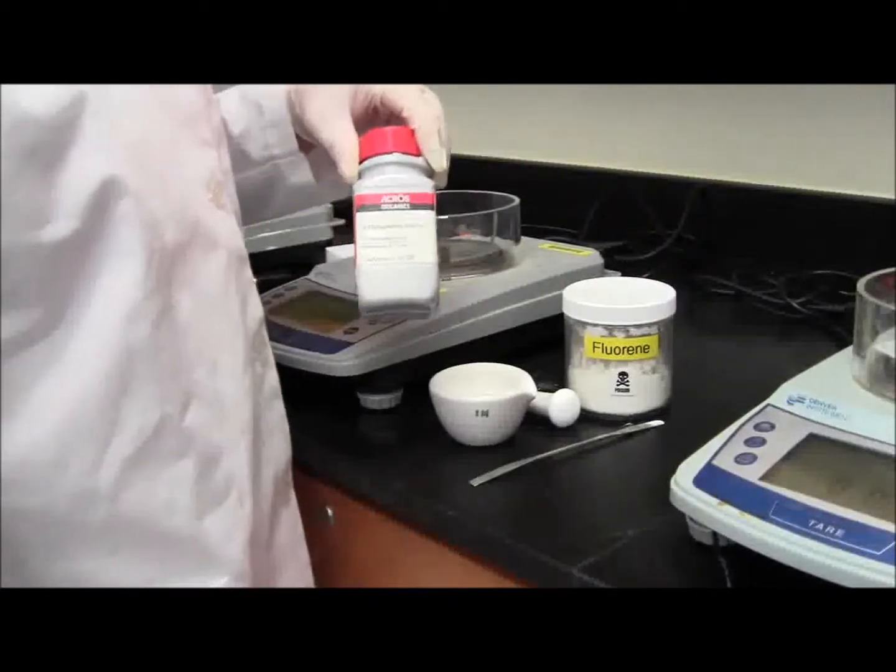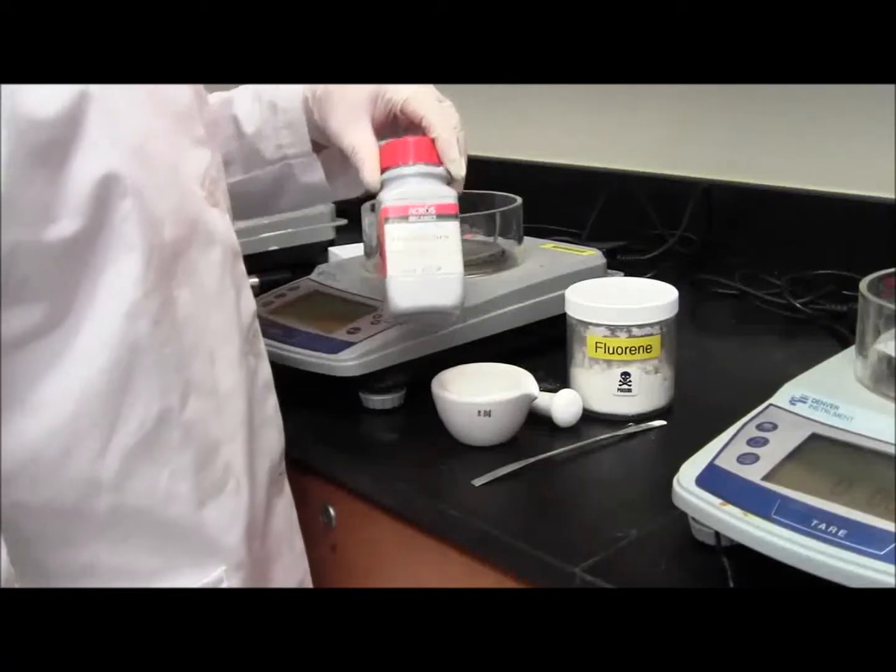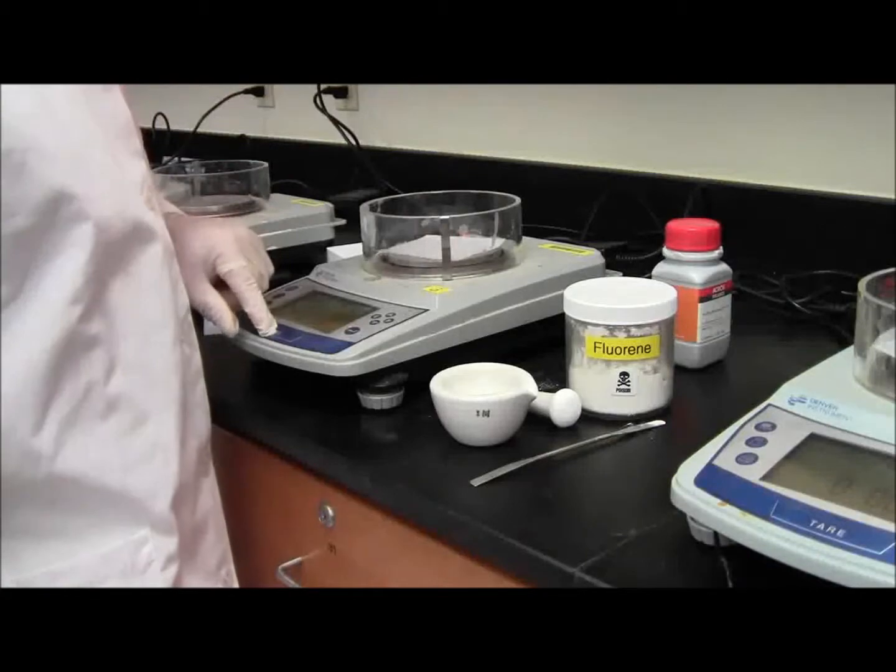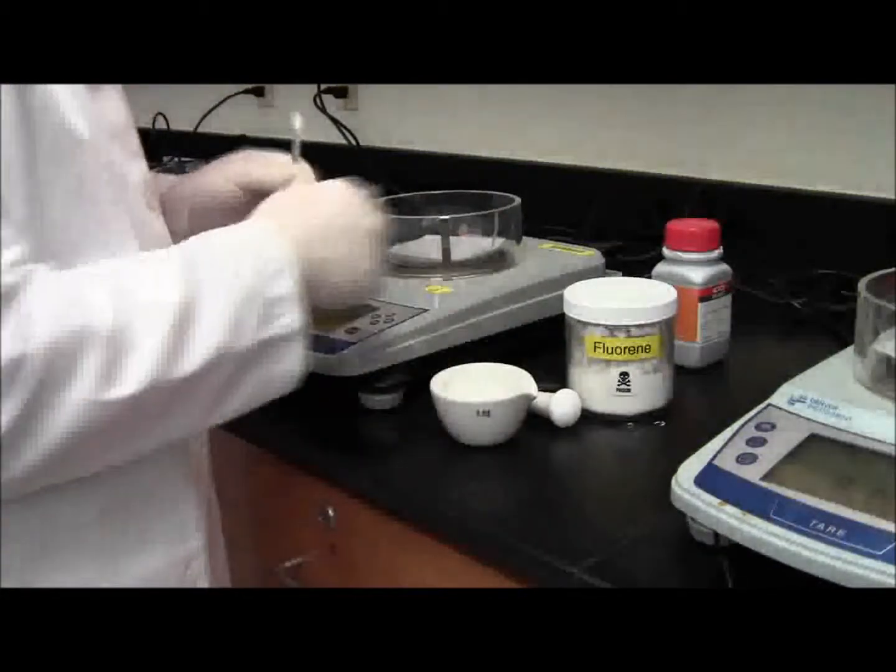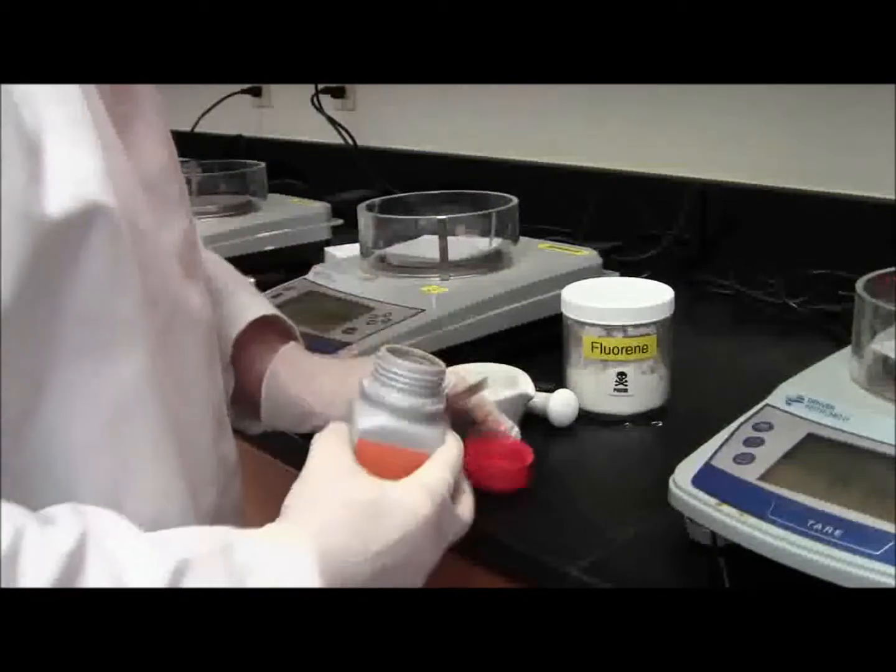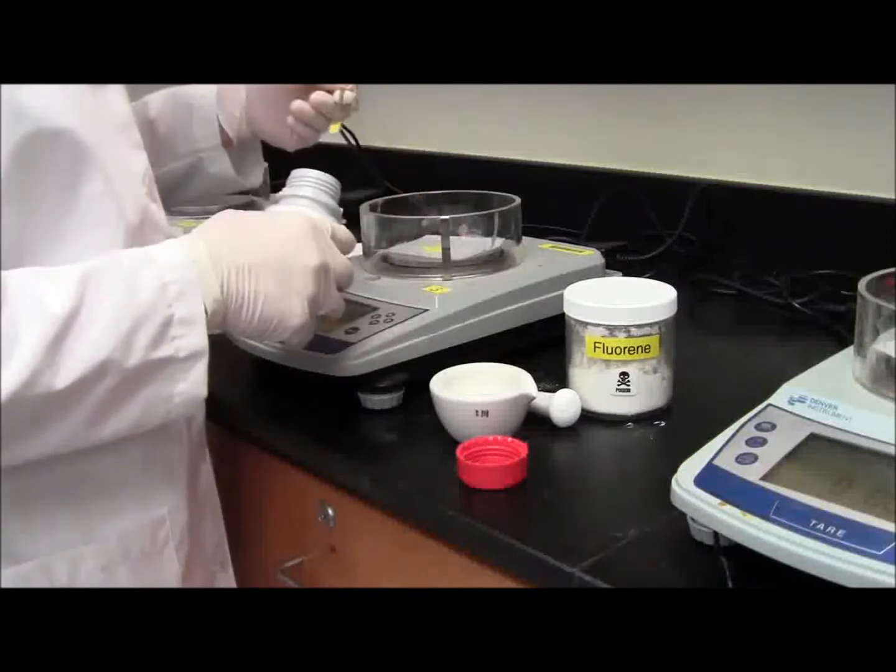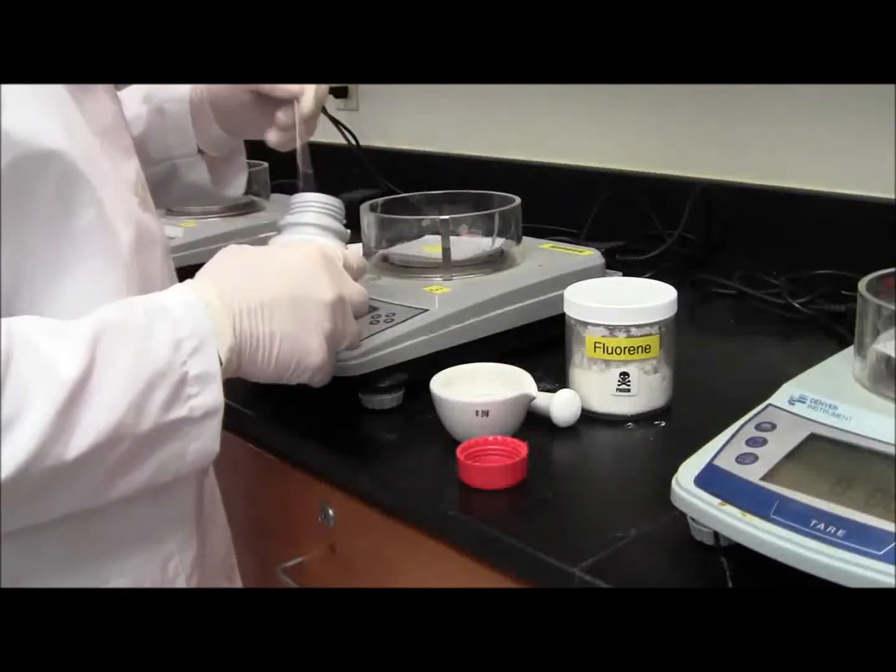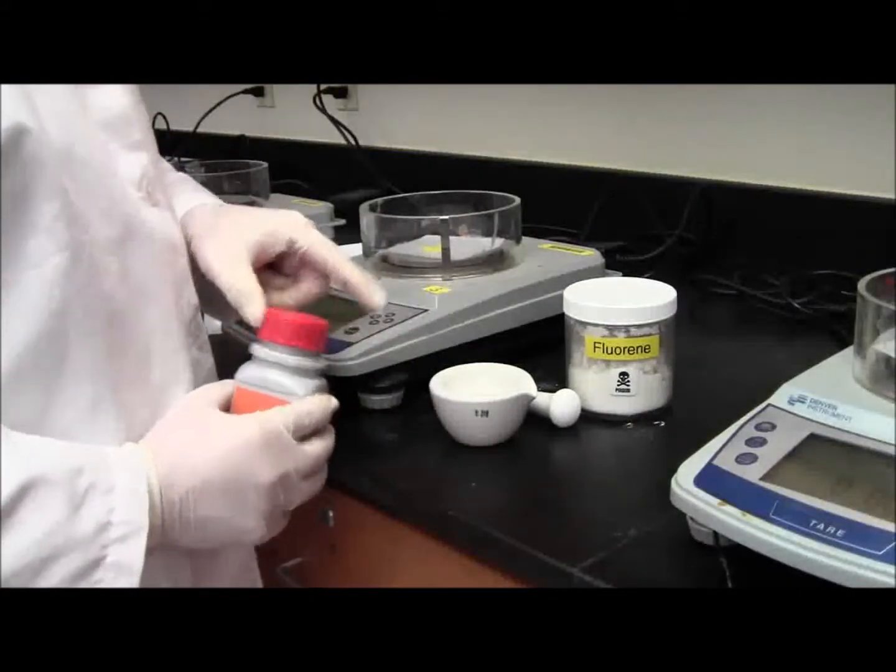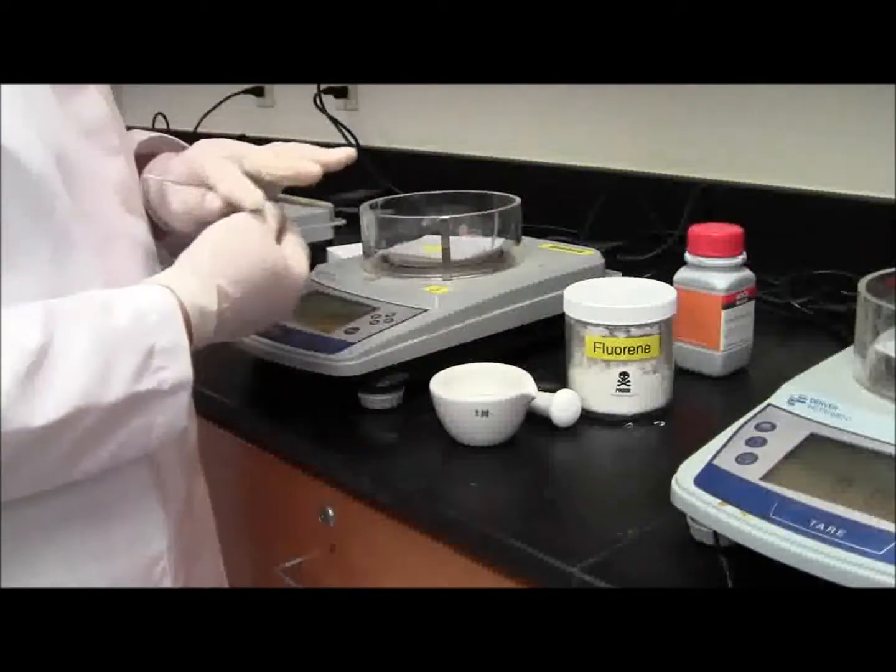Now we're going to weigh out 0.05 grams of the fluorenone. Take the weighing paper, tare it. And I got 0.06 which is pretty close. Remember to write down the two weights in your lab book.